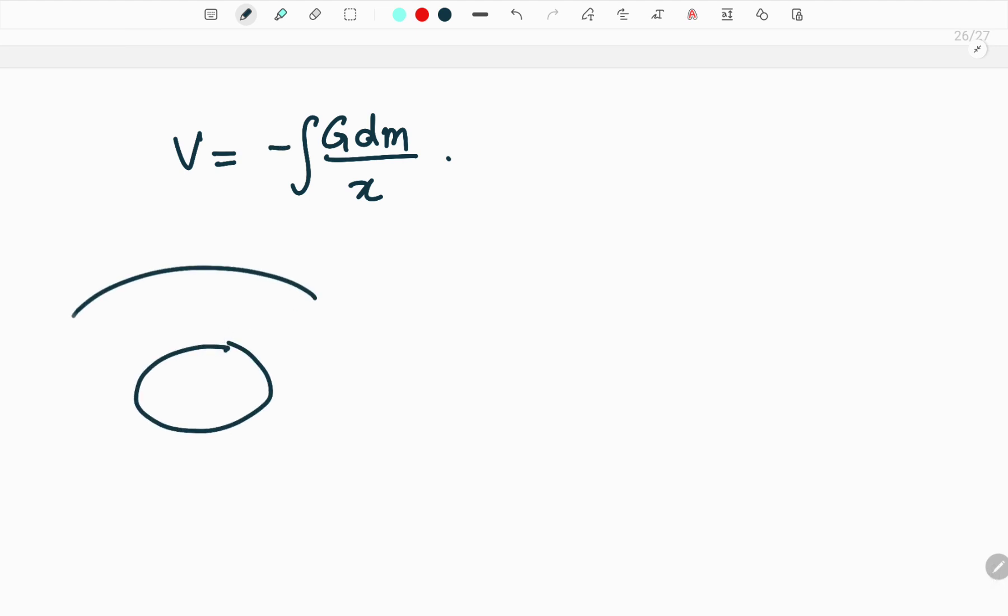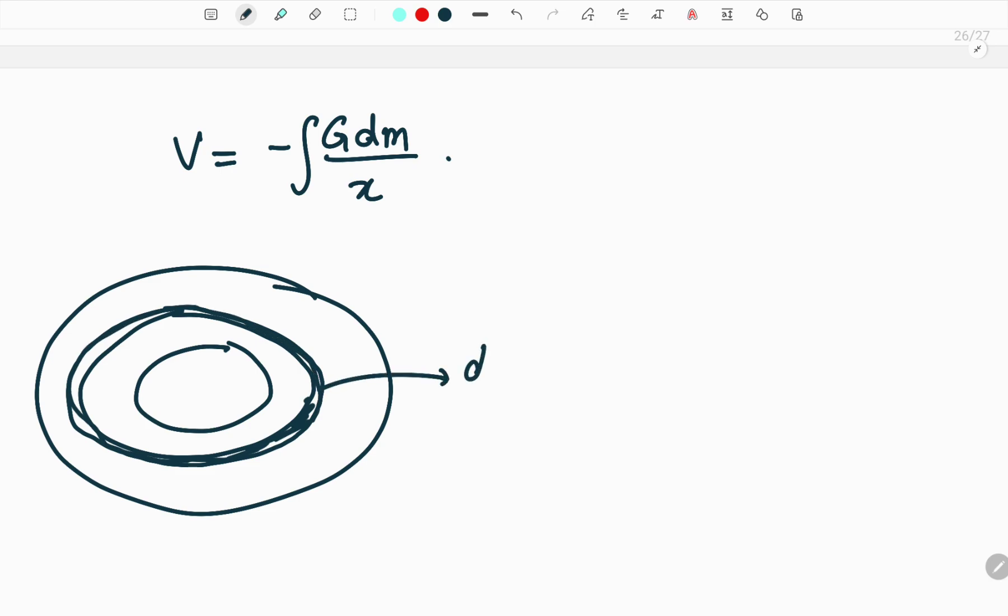So the small element is, you are having this disc, we are going to consider a small element like a ring here. So this is our small element and the mass of this small element will be dm. Now how to calculate this dm?